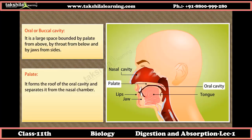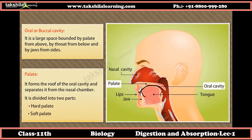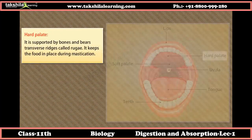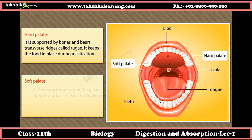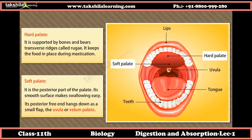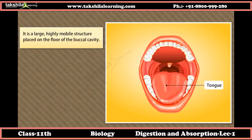The palate forms the roof of the oral cavity and separates it from the nasal chamber. It is divided into two parts: the hard palate, which is supported by bones and bears transverse ridges called rugae that keep food in place during mastication, and the soft palate, which is the posterior part whose smooth surface makes swallowing easy. Its posterior free end hangs down as the uvula.